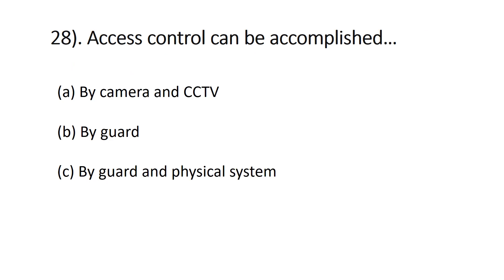Question number twenty-eight: access control can be accomplished by — A) camera and CCTV, B) by guard, C) by guard and physical system. Access control can be managed by the security guard and physical systems such as CCTV, alarms, and barriers. The right answer is C, by guard and physical system.